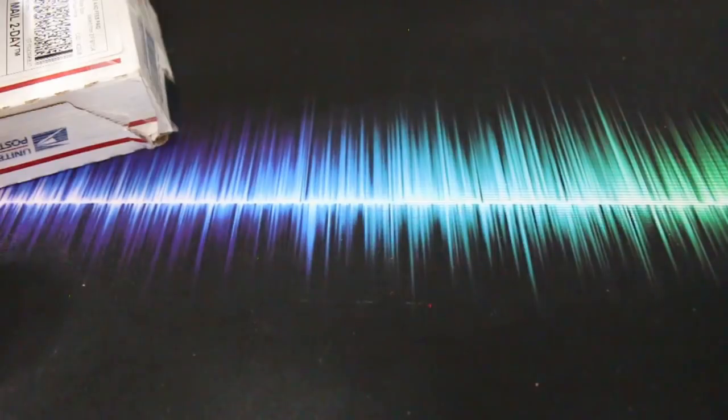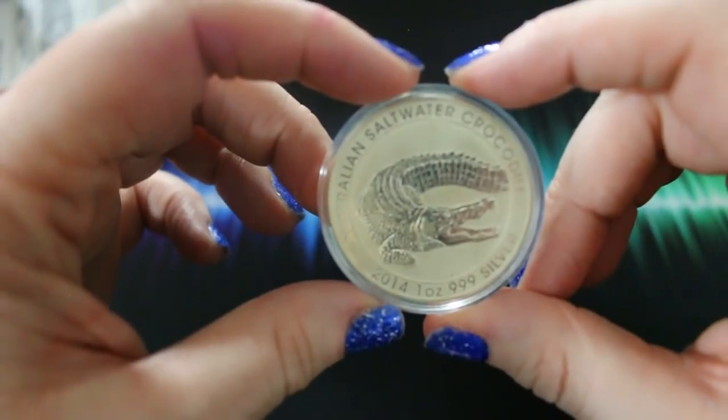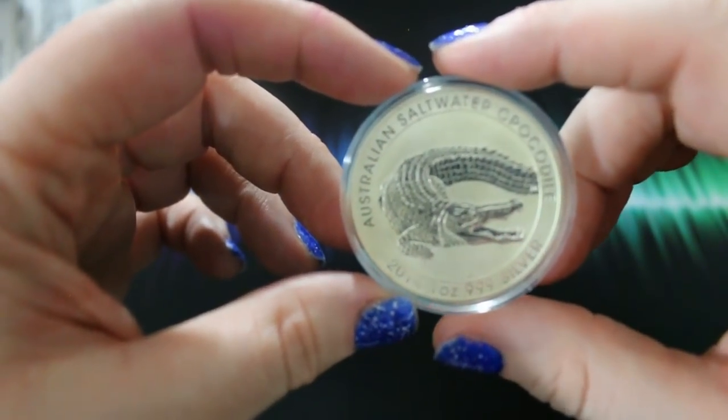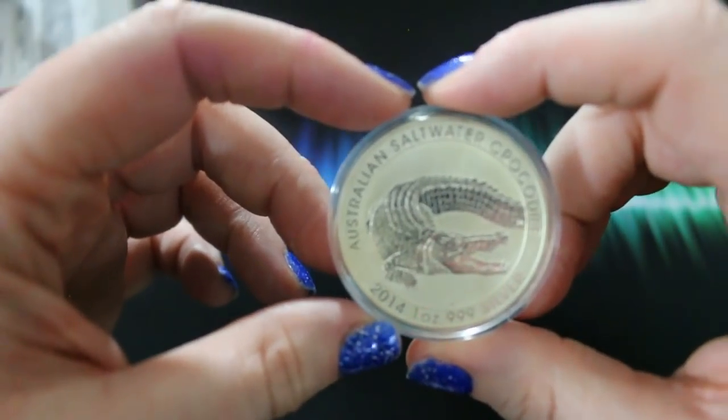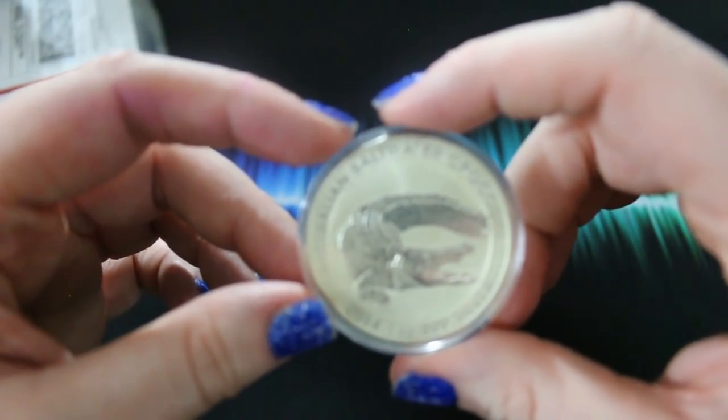So while I was out picking up my subscriber appreciation gifts I happened upon this. A 2014 Saltwater Crocodile. And we don't have any coin shops very close to here. What I have is a flea market. And mostly what they have is junk silver, peace dollars, morgans, walkers, a few ASEs.